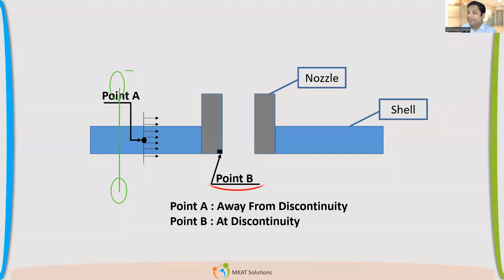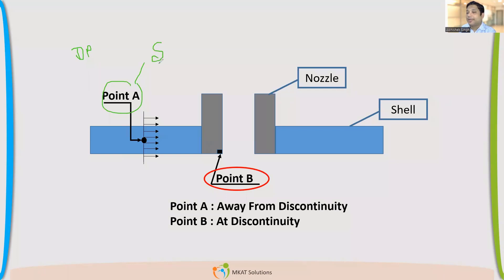Now coming to the next interesting point, which is point B. This is a point at discontinuity. So the statement I made for point A — that when I pressurize the vessel at design pressure, point A will reach a stress value equal to the allowable stress — can I make the same statement for point B, that it will also reach a stress level equal to the allowable stress? We used the formula and calculated stresses at point A. But have I calculated the stresses at this corner point? No.